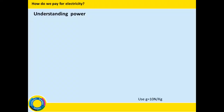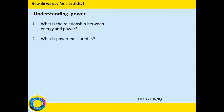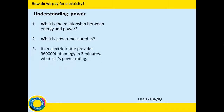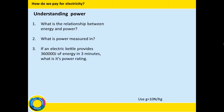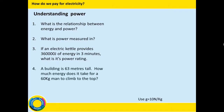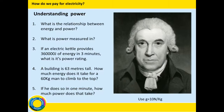Let's start off by having a look at some questions from last lesson on understanding power. Number one: what is the relationship between energy and power? Number two: what is power measured in? Number three: if an electric kettle provides 360,000 joules of energy in three minutes, what is its power rating? Number four: a building is 63 metres tall — how much energy does it take for a 60 kg man to climb to the top, and how much power does that take? Pause the film and answer those questions from last lesson.